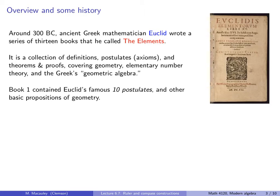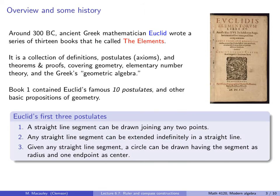Book 1 contained Euclid's famous ten postulates and other basic propositions of geometry. Here are Euclid's first three postulates, which are the only permissible constructions granted by having a ruler and a compass. The first says a straight-line segment can be drawn joining any two points, using a ruler. The second says any straight-line segment can be extended indefinitely in a straight line, also using a ruler. The third says given any straight-line segment, a circle can be drawn having the segment as radius and one endpoint as center — using a compass.